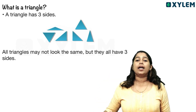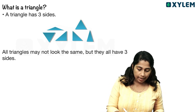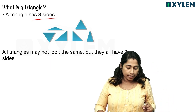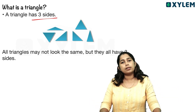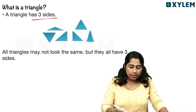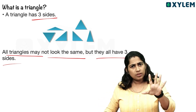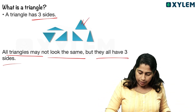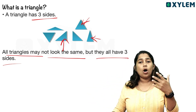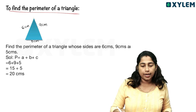What about a triangle? A triangle has 3 sides. The perimeter of a triangle is the sum of the three sides. All triangles may not look the same, but they all have 3 sides. There are many different types of triangles, so there is no single fixed formula — the common approach is to find the sum of all three sides. To find the perimeter of the triangle, we add all three sides: 6 plus 9 plus 5.